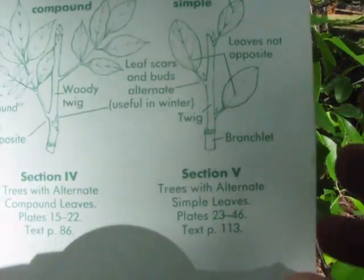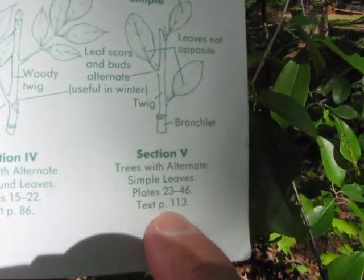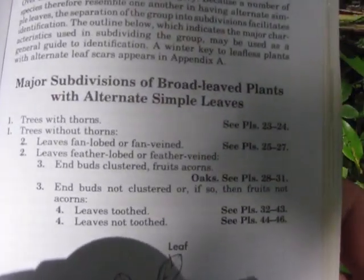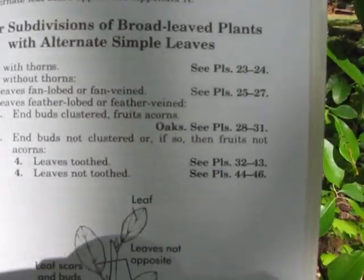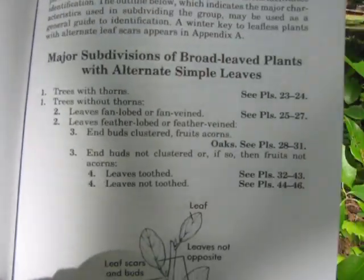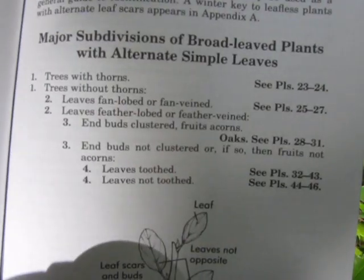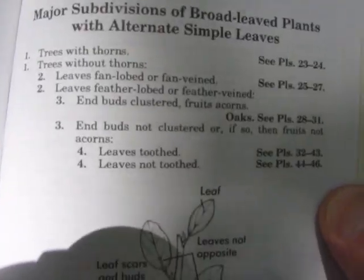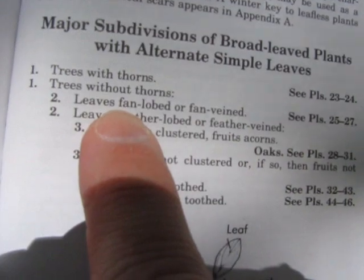Now we're in the ballpark. We go to section five, which would be plates 23 through 46 or page 113. Moving on to page 113, we have a dichotomous key — the major subdivisions of broadleaf plants with alternate simple leaves. Dichotomous keys are very easy to use; they give you choices and send you one direction or another until you narrow it down to the tree you're looking at. Number one: trees with thorns or trees without thorns. We know that ours does not have thorns.